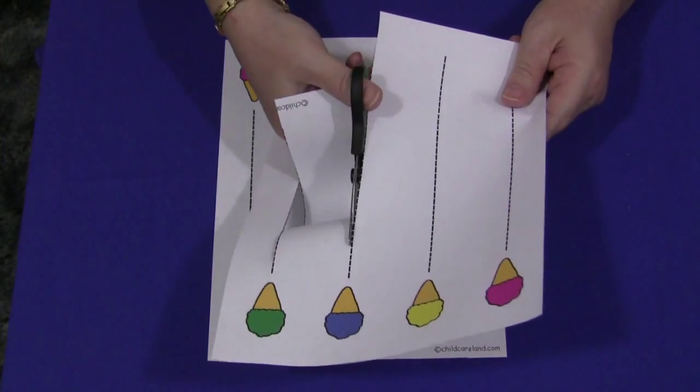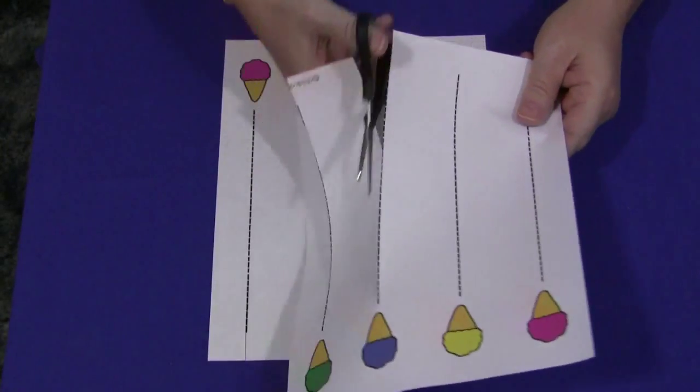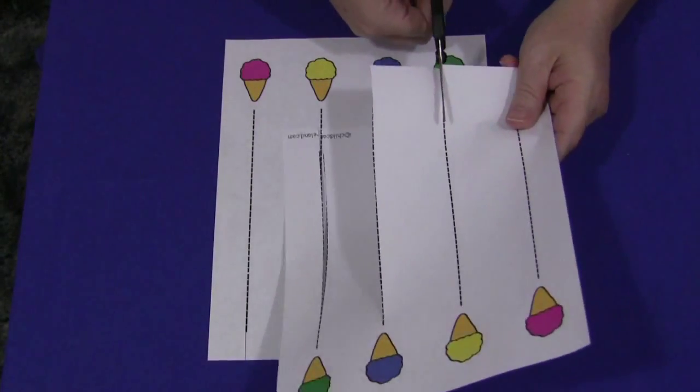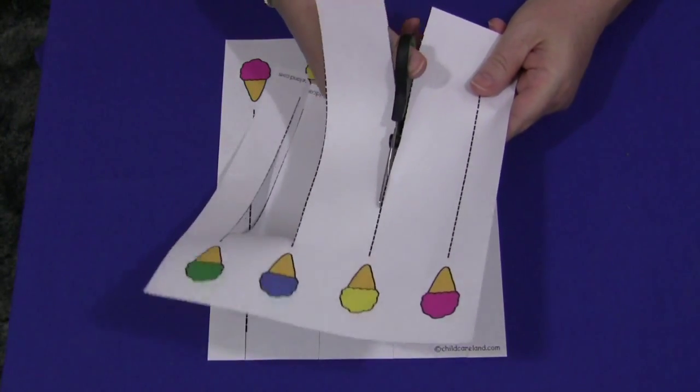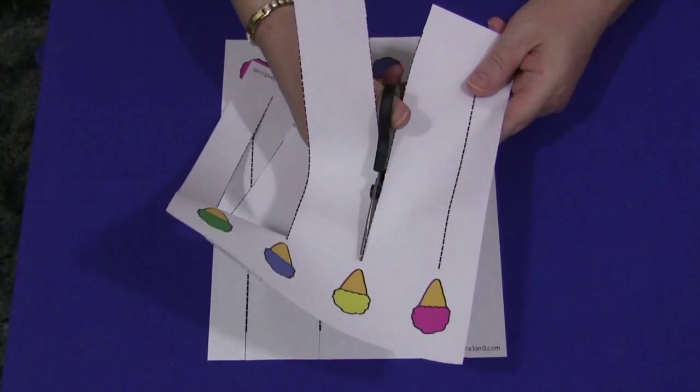Then eventually you want to maybe have some simple lines and shapes for children to practice cutting on. But it's important for children to have both kinds of activity, the free cutting and maybe more of the guided cutting.